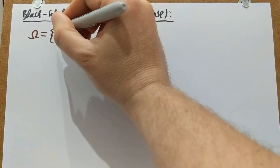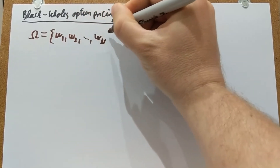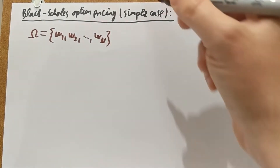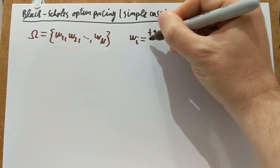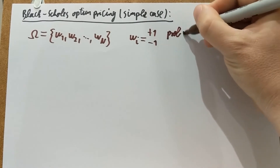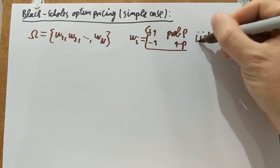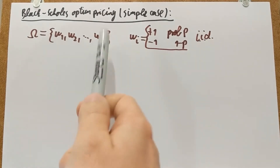I'm going to have a simple sample space. It will just consist of N outcomes — N is a fixed number, that's going to be my time horizon. I'm going to have ω_i equal to +1 or −1 with probability p and 1−p, and the ω's are going to be i.i.d. So it's ±1 i.i.d. random variables: +1 with probability p, −1 with probability 1−p, for all i from 1 through capital N.